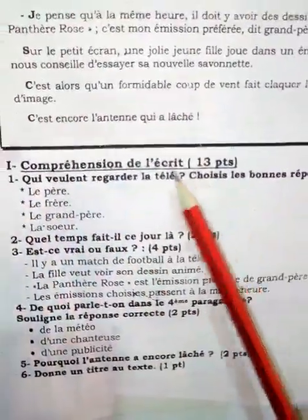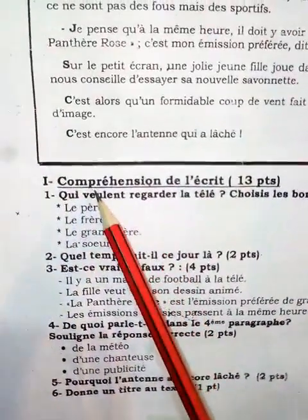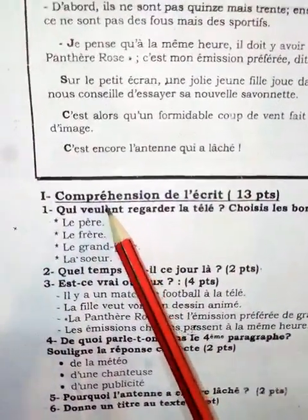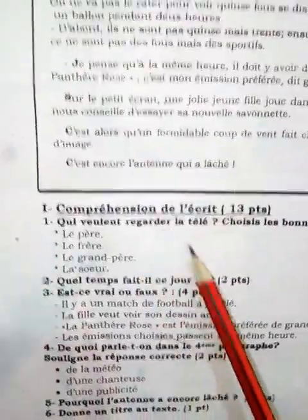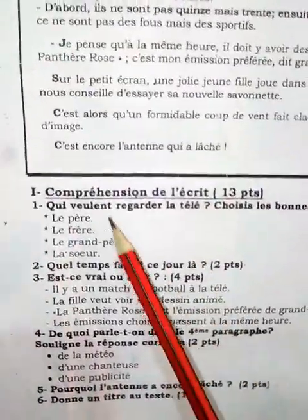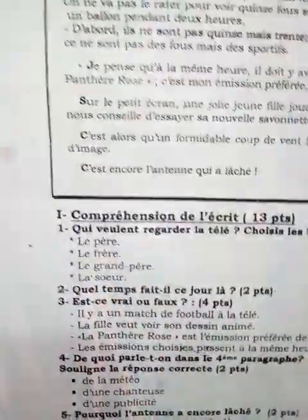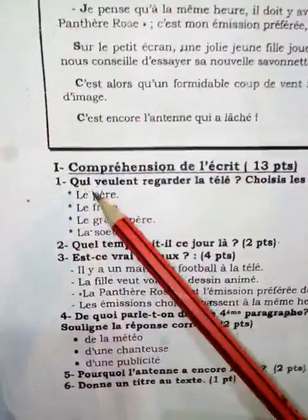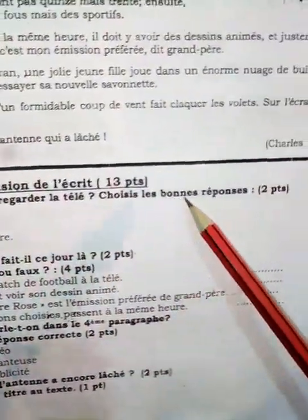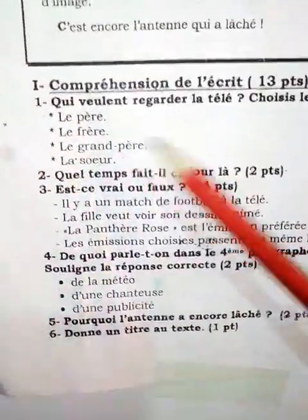Compréhension de l'écrit. Qui veut — donc « veulent » ici, ce n'est pas conjugué pour une seule personne, c'est pour deux jusqu'à trois. Il faut faire très attention à ce verbe. Ça veut dire qu'on va choisir plus de deux. Deux ou plus. Alors, qui veut regarder la télé ? Choisir la bonne réponse : le père, le frère, le grand-père, la sœur.